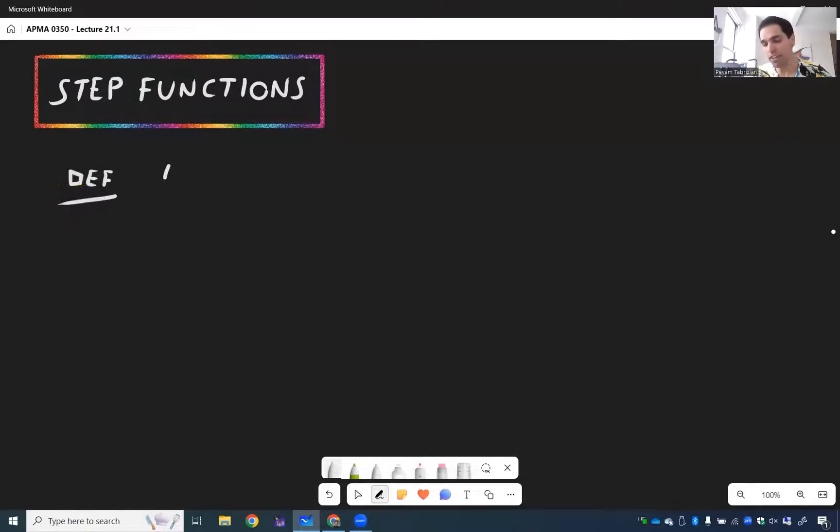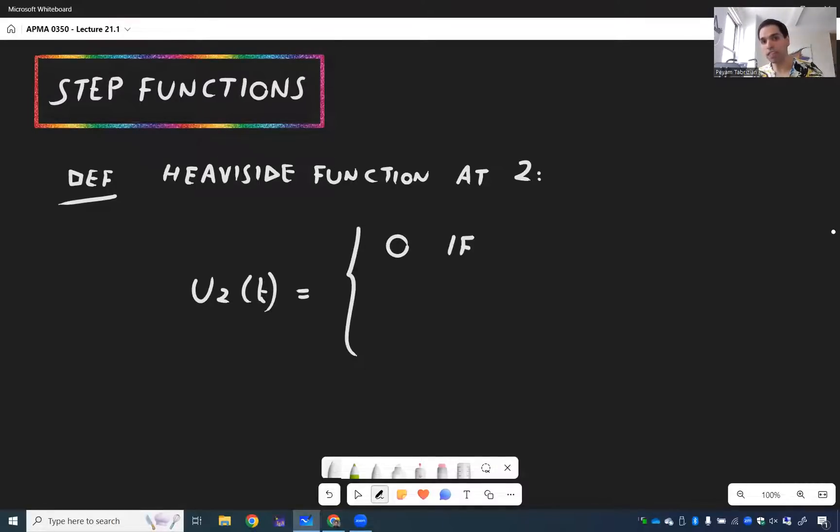So definition, the Heaviside function at two, which is called U2 of T. So not the band, but the function U2. And it's the function that's zero if T is less than two, and one if T is greater or equal to two.